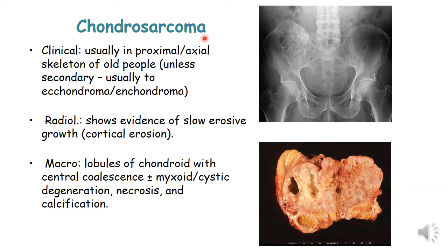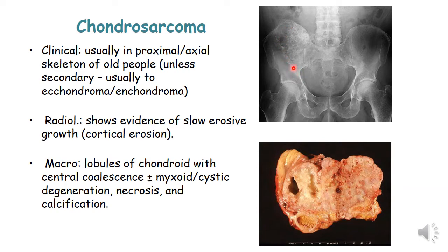For conventional chondrosarcoma, it usually arises in the proximal or axial skeleton in people in their 50s and 60s, unless secondary on top of enchondroma or osteochondroma. Radiological features show evidence of slow erosive growth with cortical erosion. The tumor has ill-defined borders with spotty calcification and a lobulated surface, characteristic of a cartilaginous tumor.